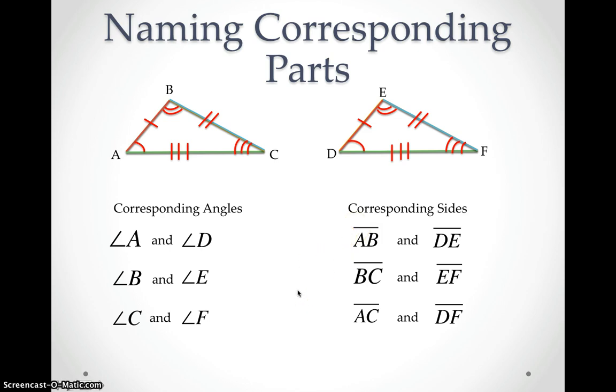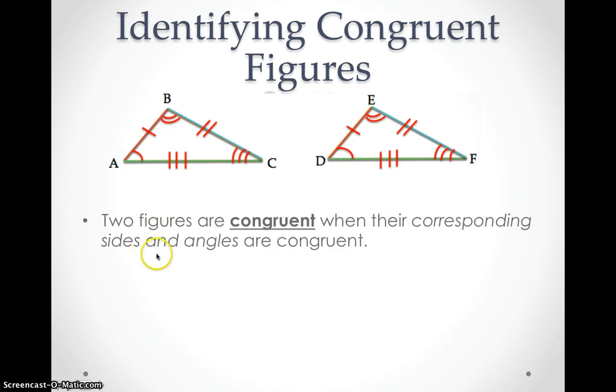So now that we've talked about the corresponding parts, we're going to look closer at these two figures that we just identified. And we're going to take a look and see that because they have corresponding sides and because they have corresponding angles, that is why these two figures are congruent. So all congruent figures are going to have those corresponding sides and angles.